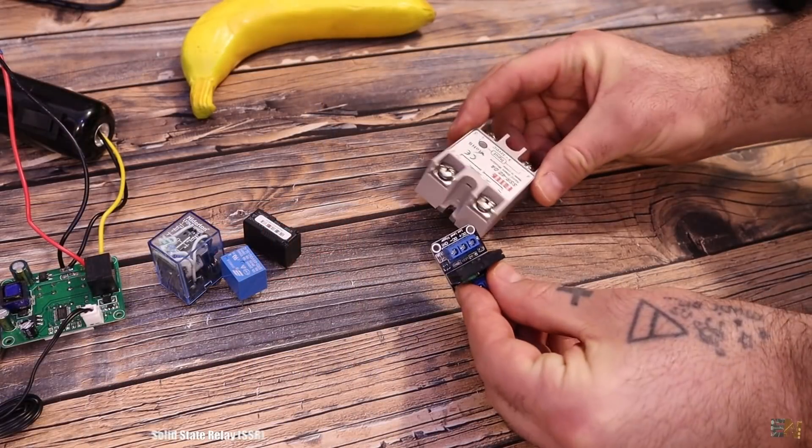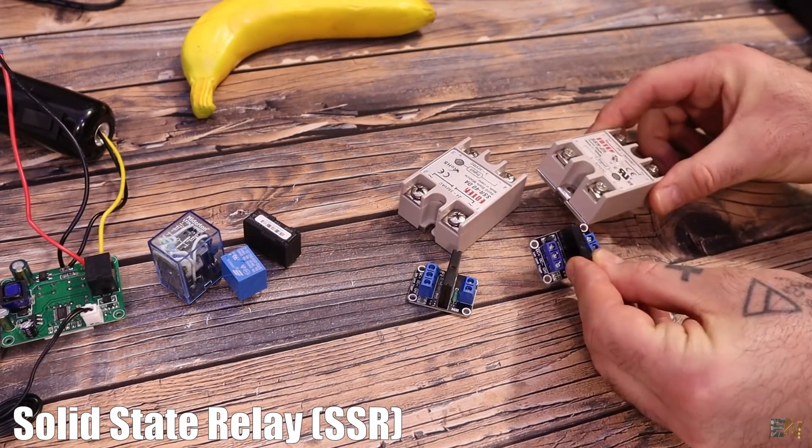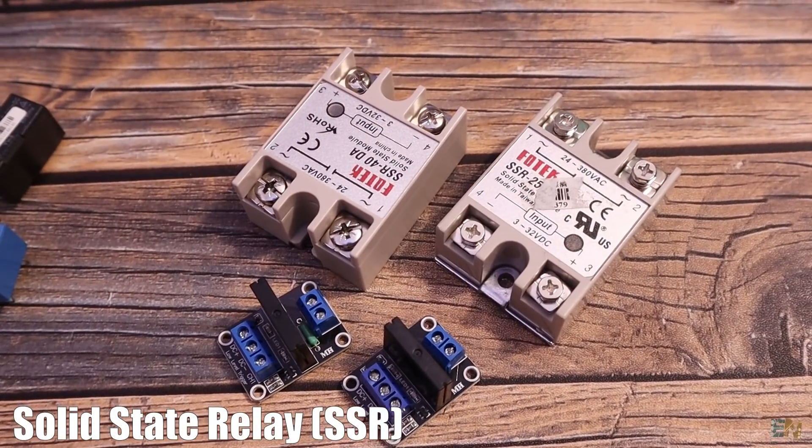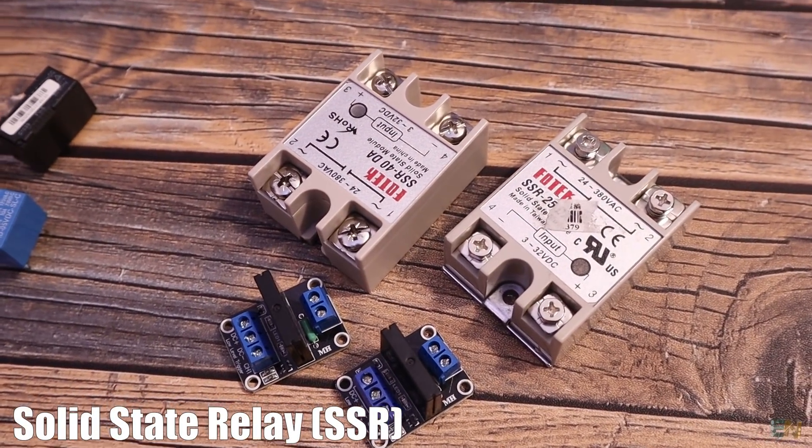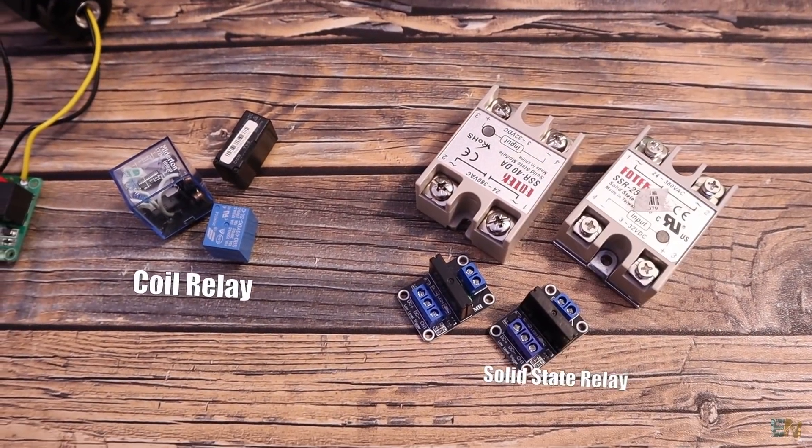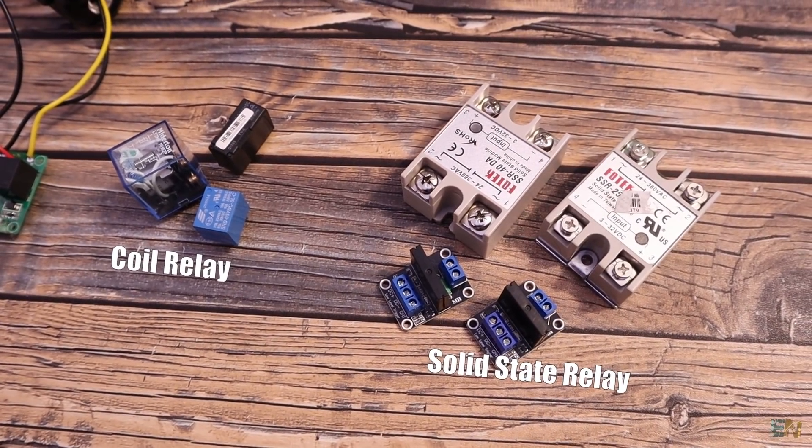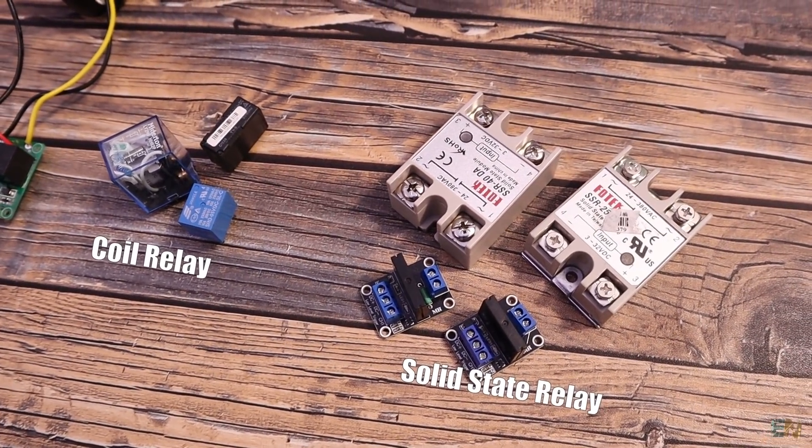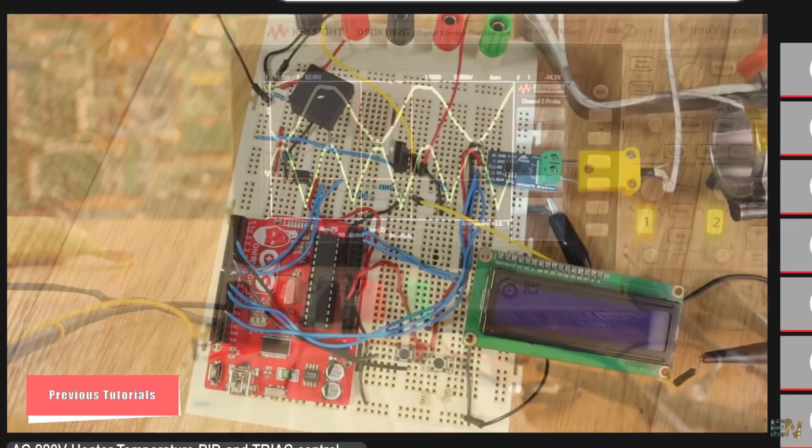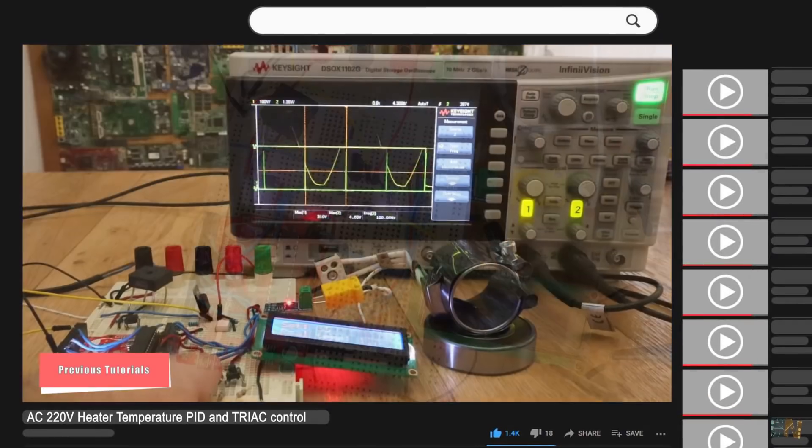So instead of a coil relay, we could use a solid state relay, also called SSR. With this component we don't have the clicking sound and no sparks. But dimming AC power is more difficult. For that just check my previous video on the zero cross detection and triac control.